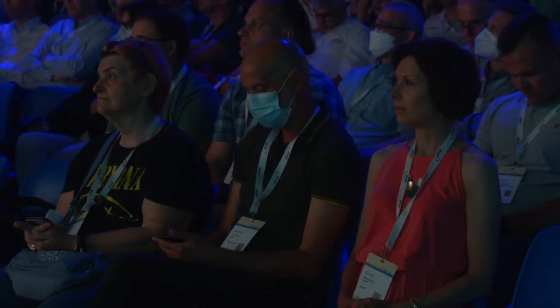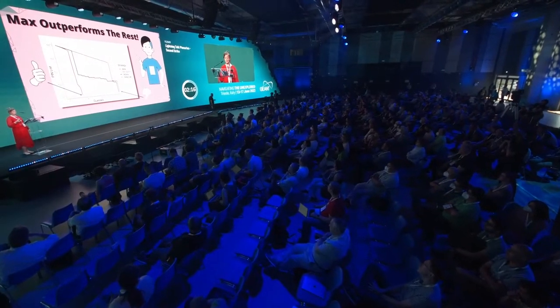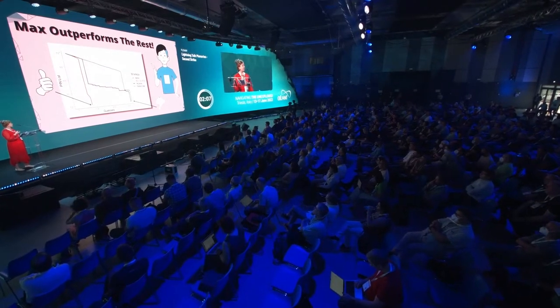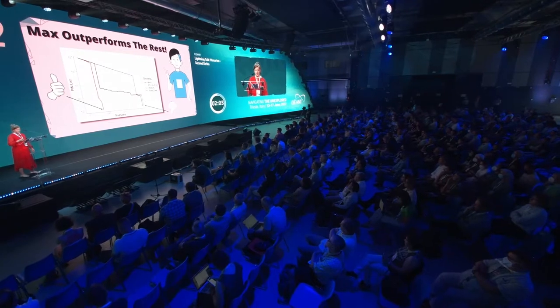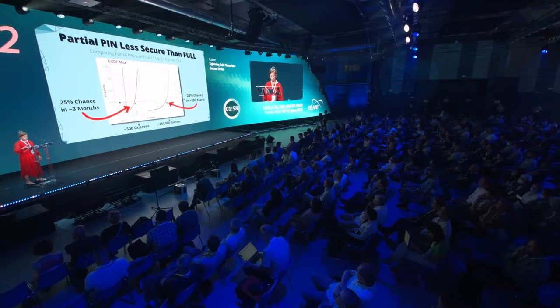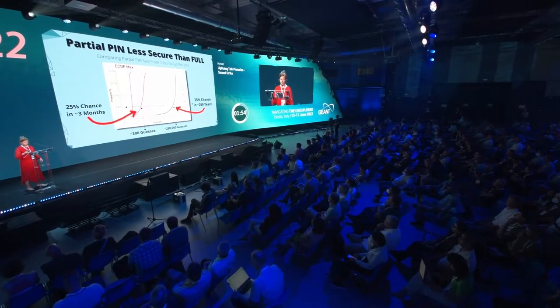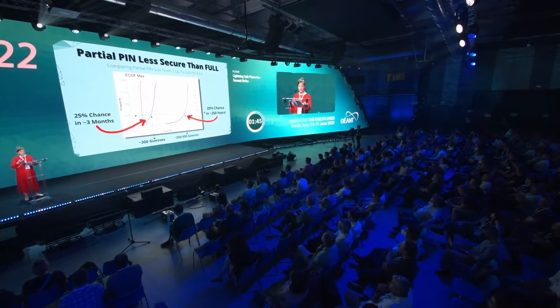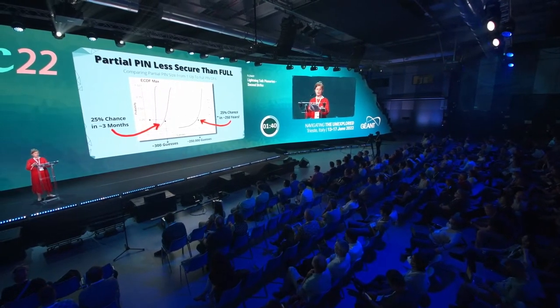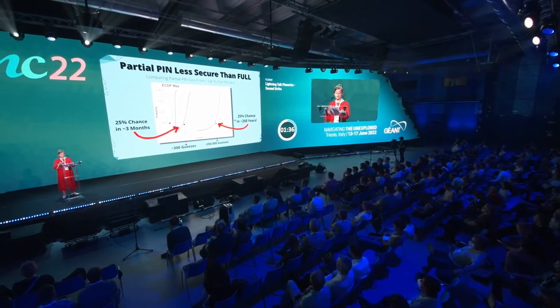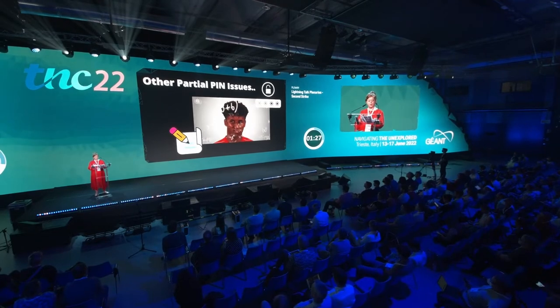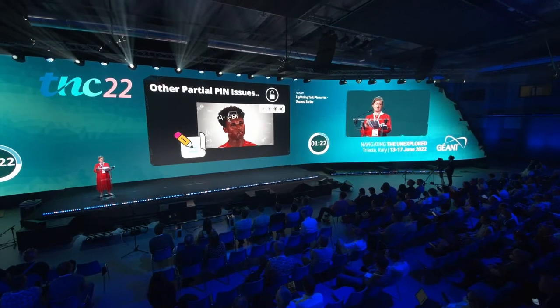A clear winner is the max method. We can see from this diagram that the random method is three times slower than the max method for guessing — in this case a four-digit PIN with a partial PIN of two. Looking more closely at the max method, for a PIN size of six with a partial PIN size of three, like Bob's, it takes around 300 guesses to have a 25% chance of guessing the PIN, which is around three months. Compare this to the full PIN of six, where the same 25% chance would take about 250,000 guesses and would take 250 years. It is also worth noting that it can be difficult to remember specific positions of your PIN, so people with memory issues would find this challenging, and it can also prompt people to write down their PIN number, which in itself is another security risk.